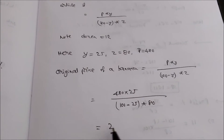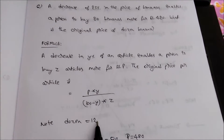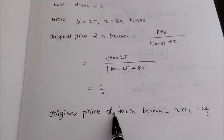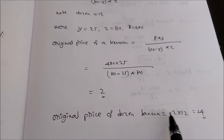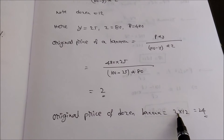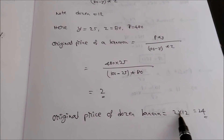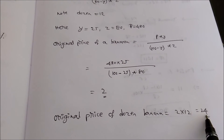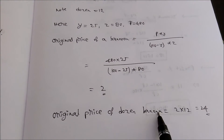But actually they asked for the original price of a dozen bananas. A dozen means 12. So the original price of a dozen bananas, that is 12 bananas, is equal to 2 multiplied by 12. Each banana costs 2 rupees, so 12 bananas means 2 into 12, which gives 24 rupees.